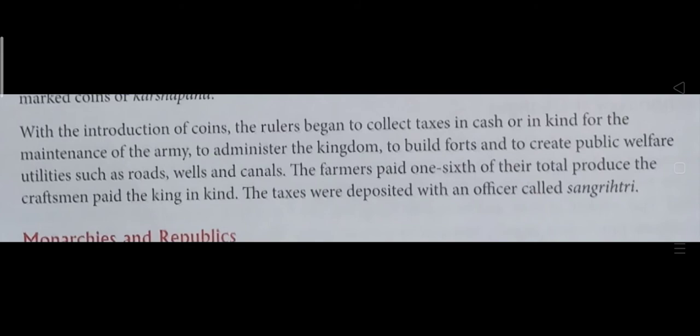With the introduction of coins, the rulers began to collect taxes in cash or in kind for the maintenance of the army and to administer the kingdom, to build forts, and to create public welfare facilities such as roads, wells, and canals. The farmers had to pay one-sixth of their total produce, and the craftsmen paid the king in kind. The taxes were deposited with an officer called Sangrita.